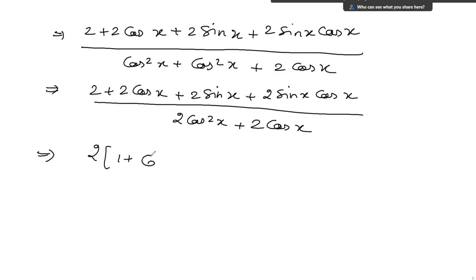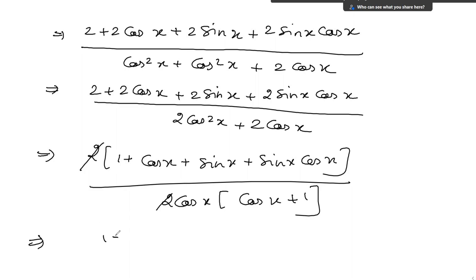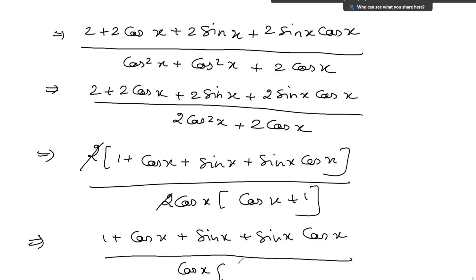Take 2 common from the numerator — so we have 1 plus cos x plus sin x plus sin x cos x — and take 2 cos x common from the denominator, so in the bracket we have cos x plus 1. Cancel this 2 and 2, and we are left with 1 plus cos x plus sin x plus sin x cos x, divided by cos x times the bracket cos x plus 1.